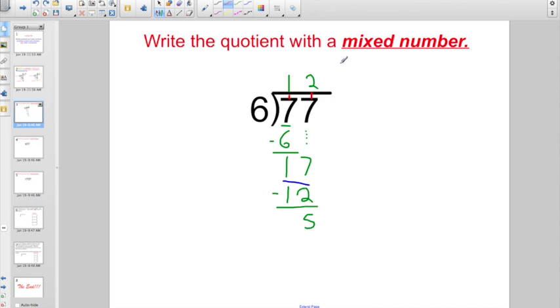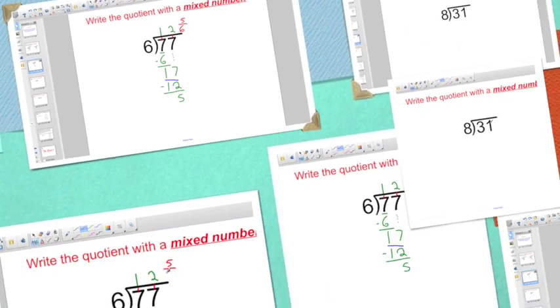The remainder is the numerator. The divisor, that 6, is my dividend. This is 12 and 5/6, if I write it as a mixed number.